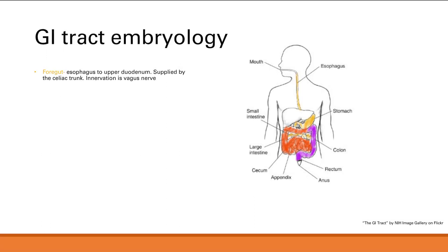GI tract embryology — how the GI tract develops. We split it into three parts: there's the foregut, the midgut, and the hindgut.